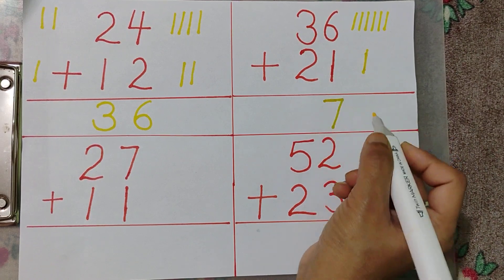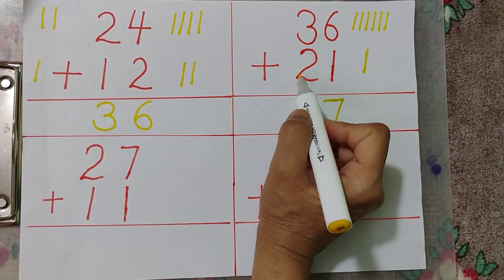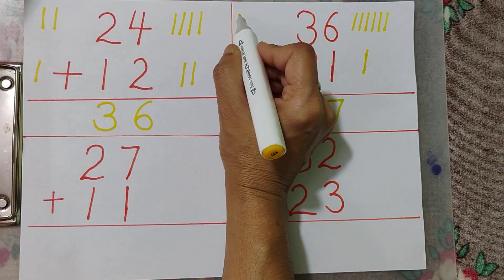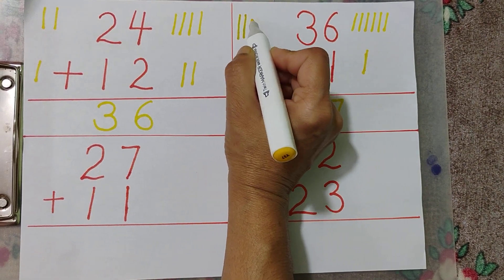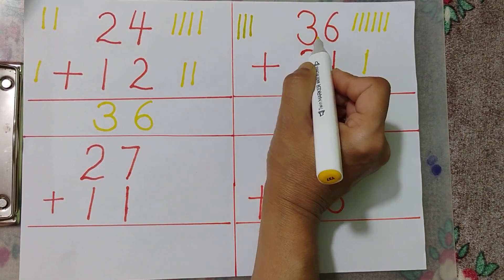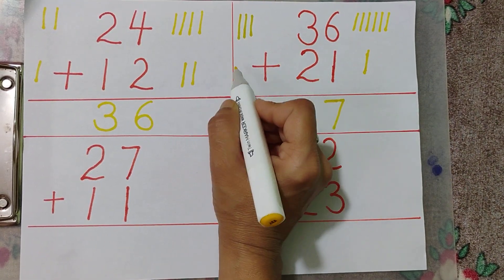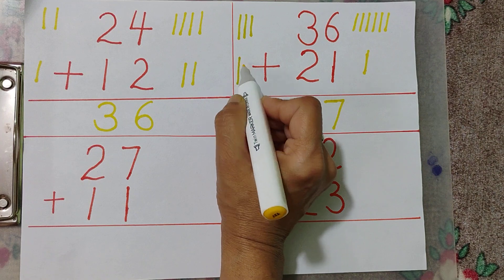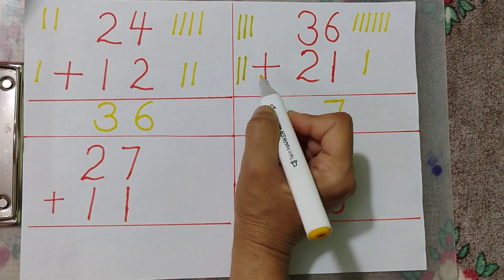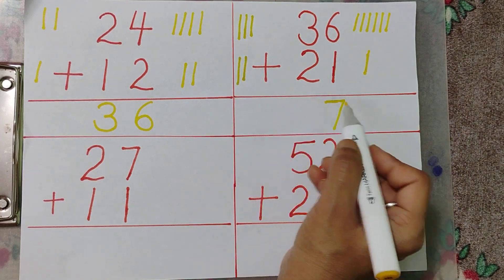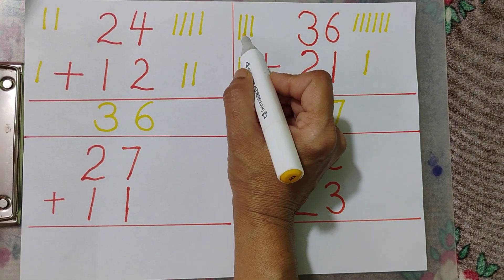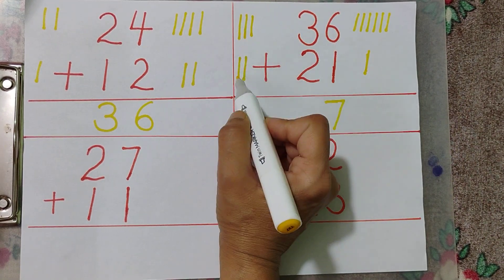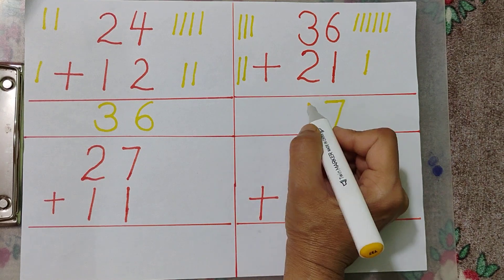7. 3 plus 2. 1, 2, 3. 3, 2. 1, 2. Total: 1, 2, 3, 4, 5.